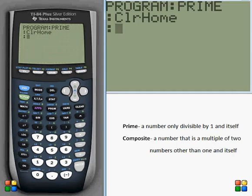So the first thing you have to understand is what is the difference between a prime and composite number. As you can see, a prime number is a number only divisible by one and itself, while a composite number is a number that is a multiple of two numbers other than one and itself.